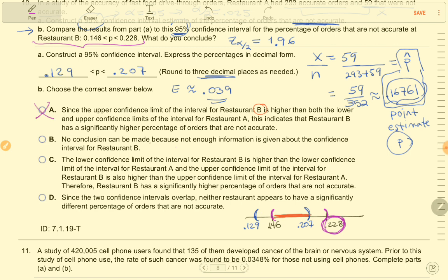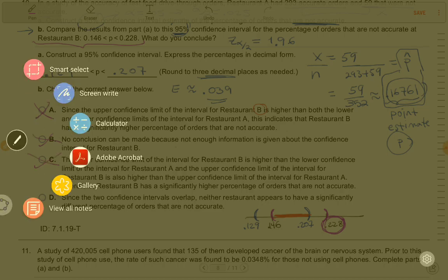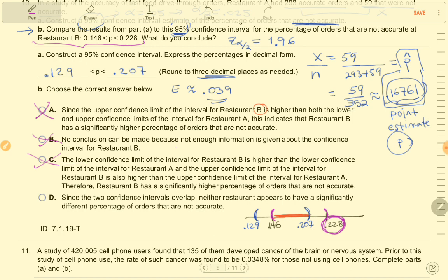Answer B, no conclusion can be made. Nah, that's not it. The lower confidence limit of the interval for B is higher. This I can already tell is not right because it's again talking about a single confidence limit. We need the entire interval of one to be different than the entire interval of the other to conclude that they're significantly different.